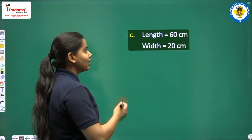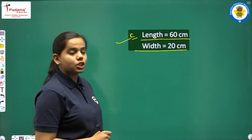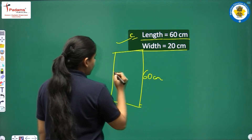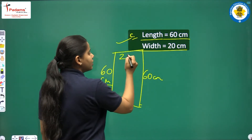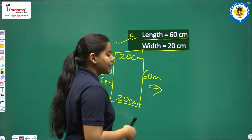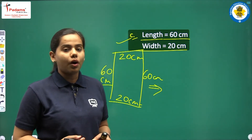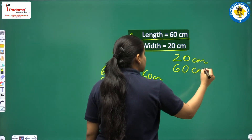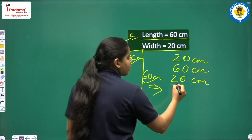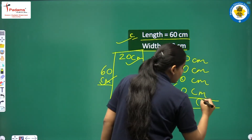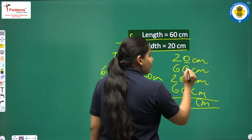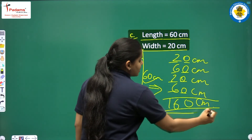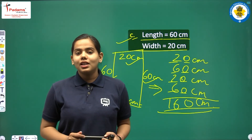Part C: length is 60 cm and width is 20 cm. The rectangle is drawn vertically. Length is 60 cm, so the other side is also 60 cm. Width is 20 cm, so the other side is also 20 cm. We add: 20, 60, 20, 60. Adding ones: 0 plus 0 plus 0 is 0. Adding tens: 2 plus 6 is 8, plus 2 is 10, plus 6 is 16. The perimeter of this rectangle is 160 cm.